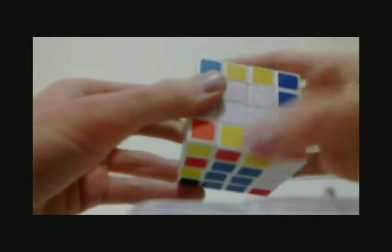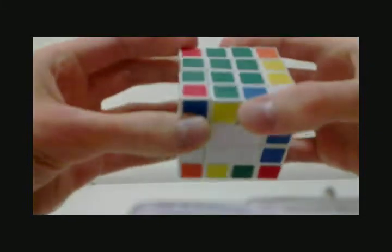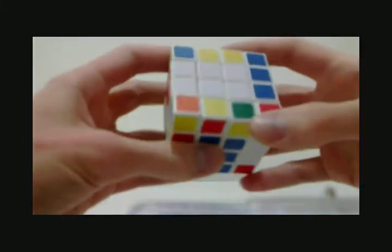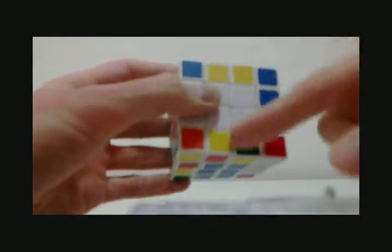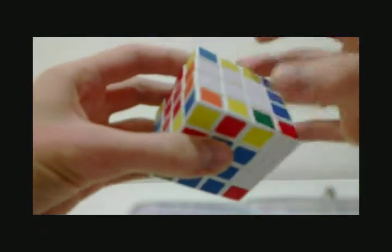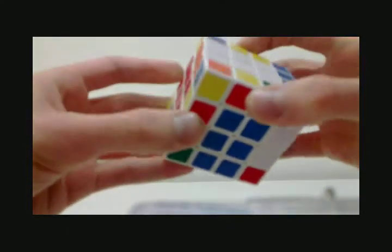If by any chance you have only two unpaired edges left, you have to purposely unpair the third one by using the standard move. You have to make sure that all of these three edges are from one layer.